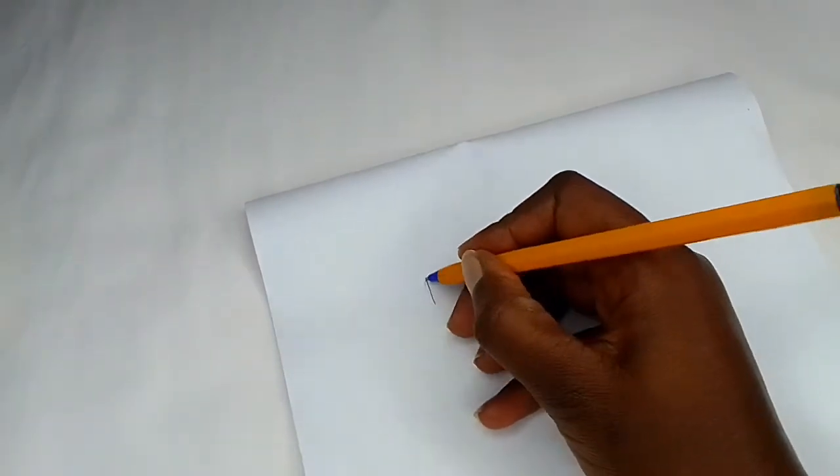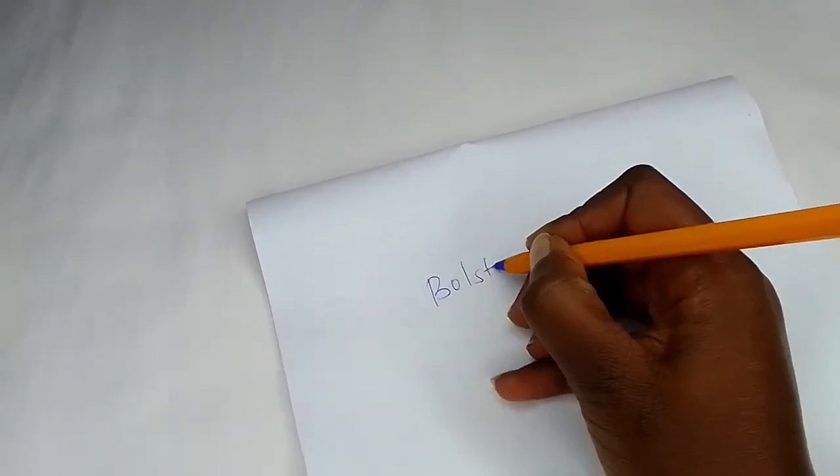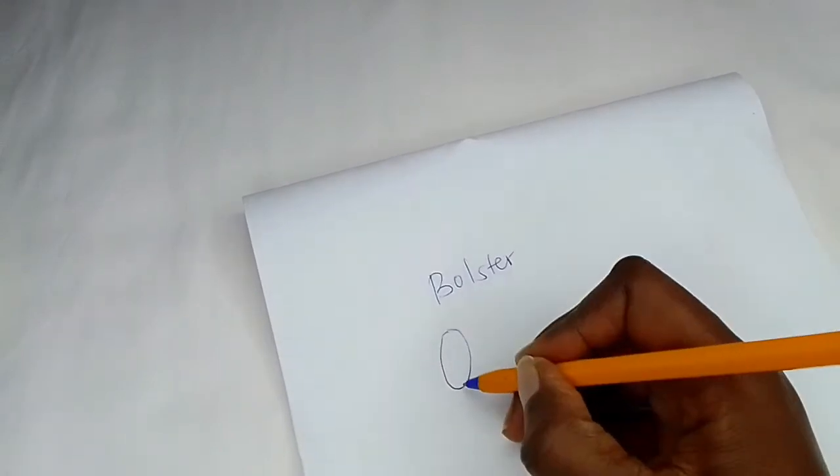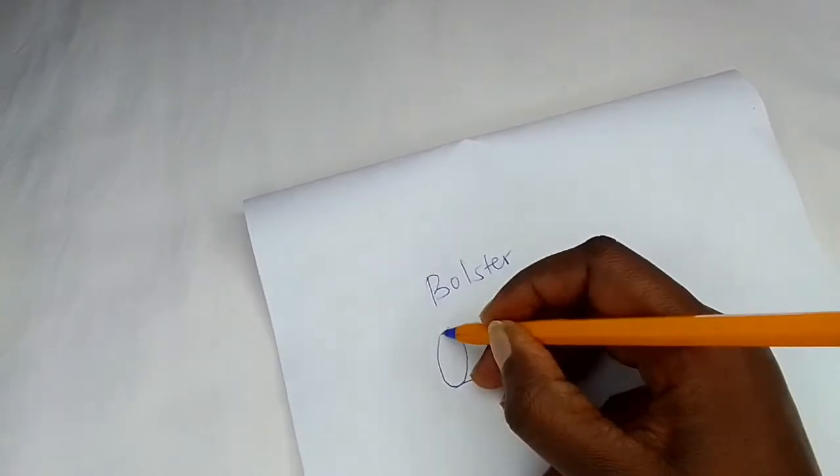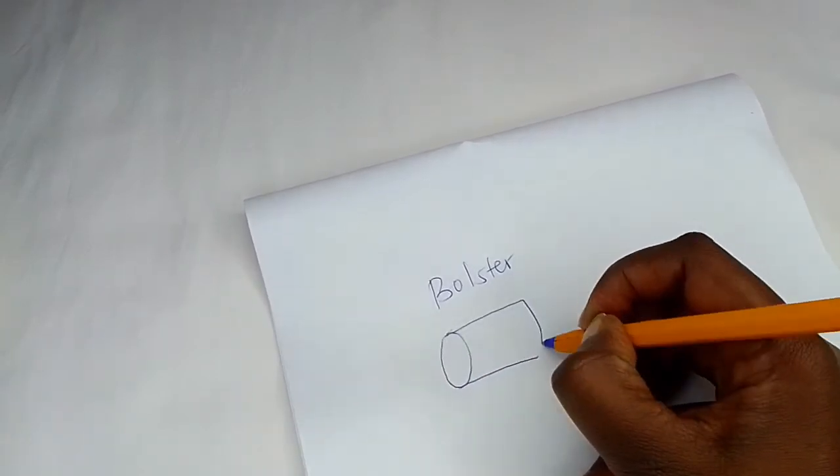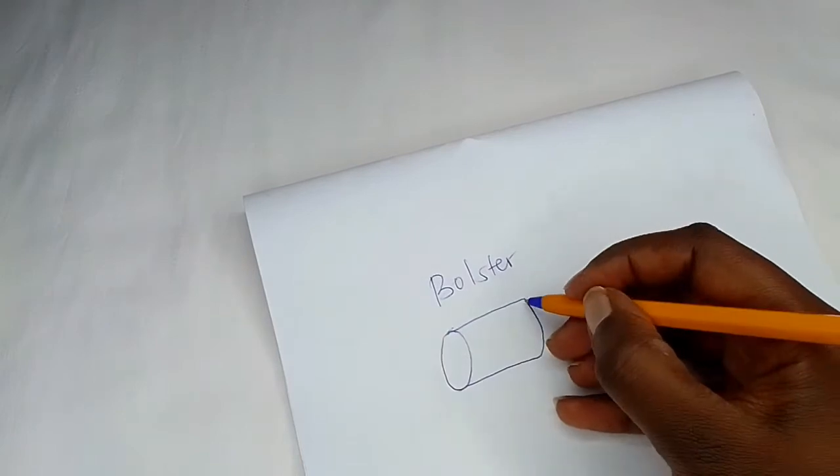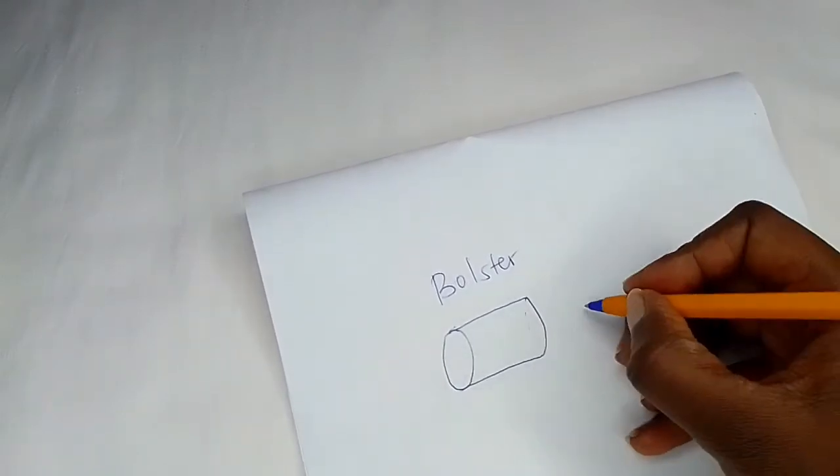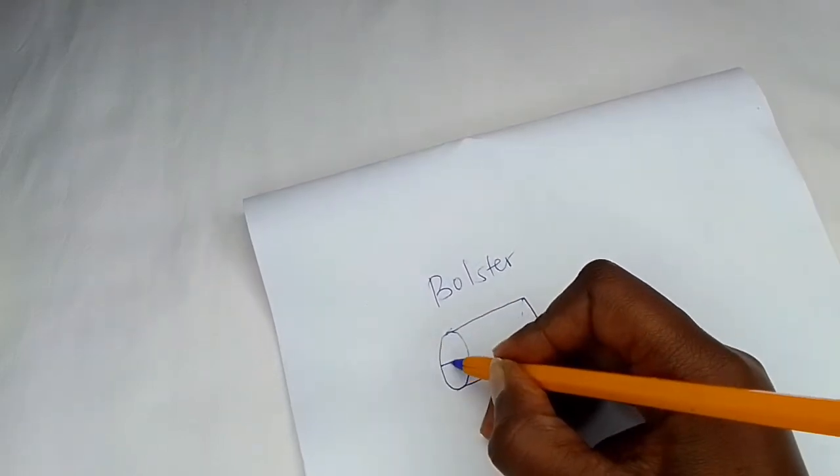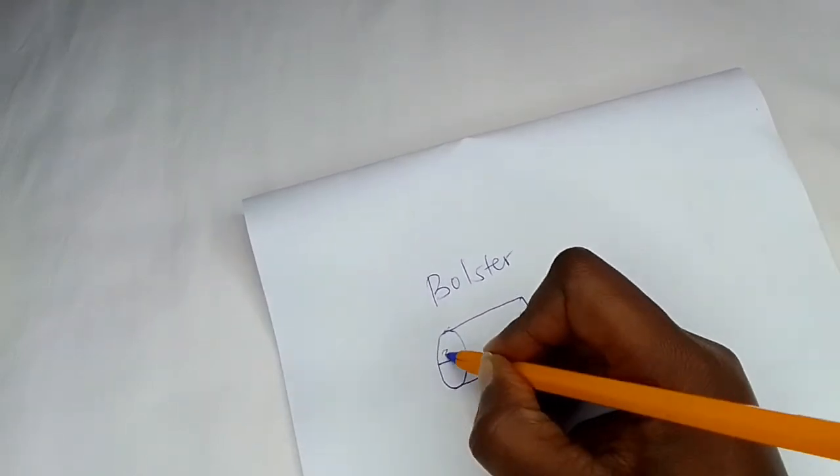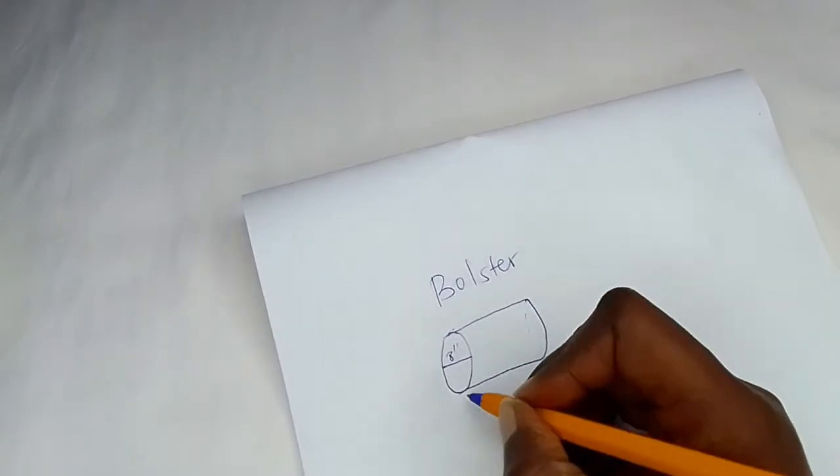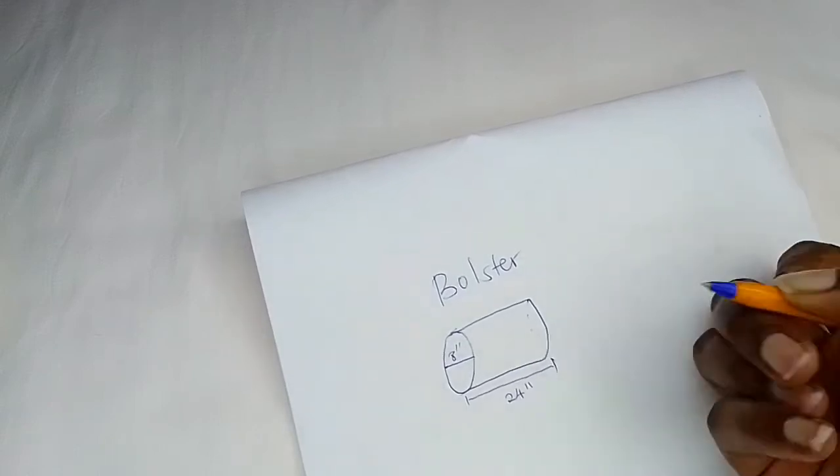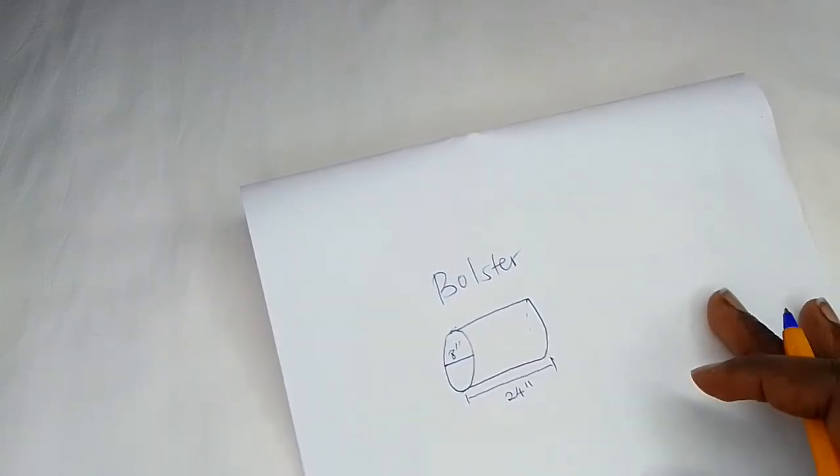So guys, I want to make a bolster, and this is a pillow that is round shaped like that. Okay, I hope my illustration is good, but the other side is also round. So my bolster, I wanted to have a diameter of 8 inches and a length of about 24 inches.